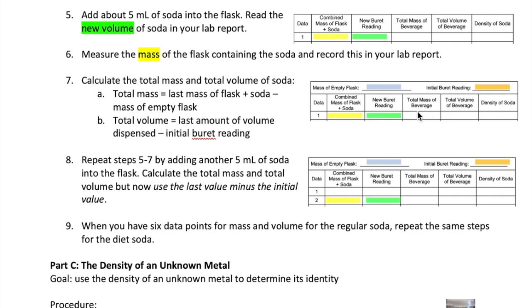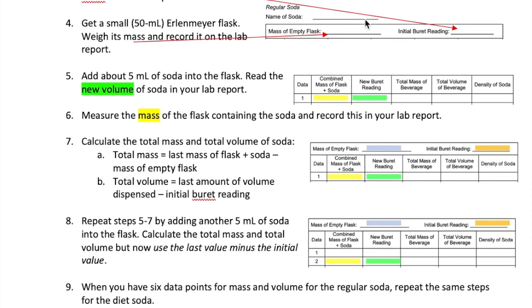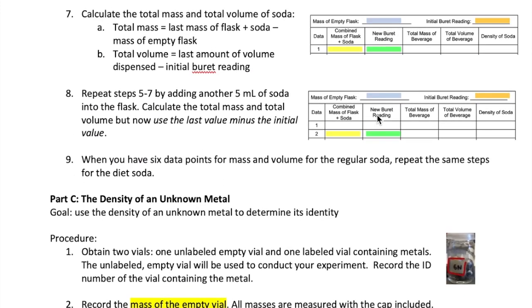To get the total mass, take the last mass you have and then subtract it from the mass of the empty glass. To get the total volume, subtract the new burette reading from the initial burette reading. Then use the total values of both of these mass and volume to calculate the density. You will keep repeating steps 5 to 7 with another 5 milliliters of soda. The total mass and volume should increase and you will use these to calculate the density.